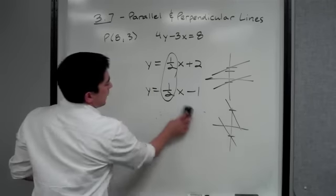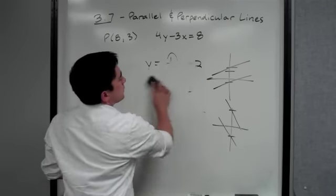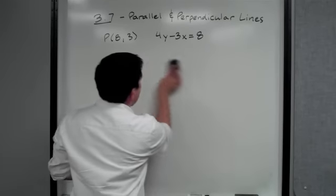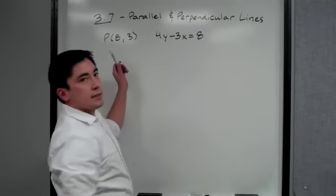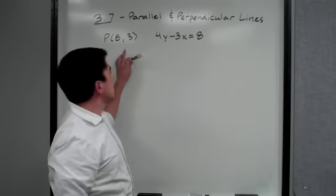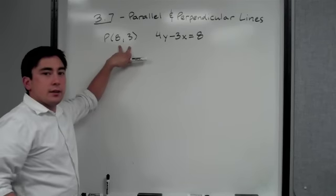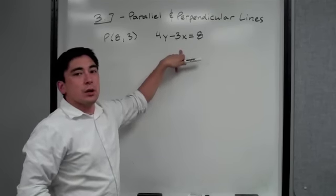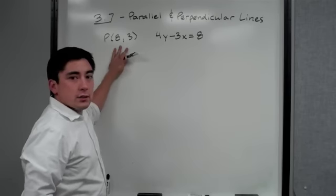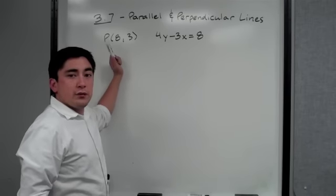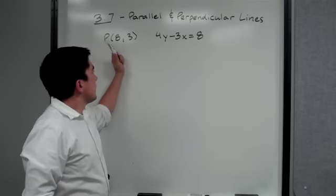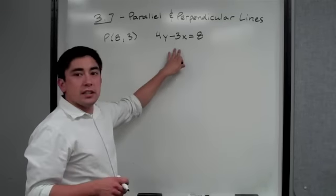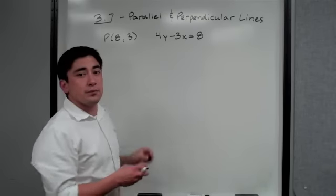So our first problem is asking: what is the equation of a line that crosses through the point (8, 3) and is parallel to this line? We have a point, so if we can figure out the slope, we can plug it in. What we need to do is find the slope of the given line.